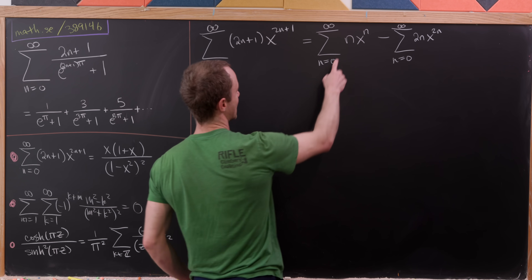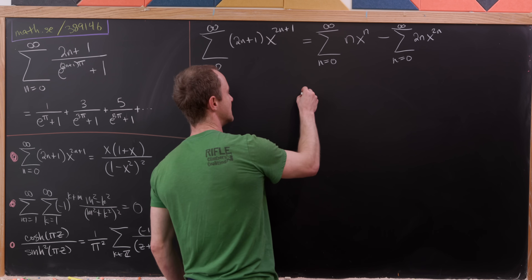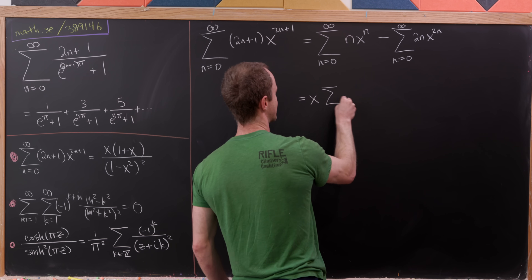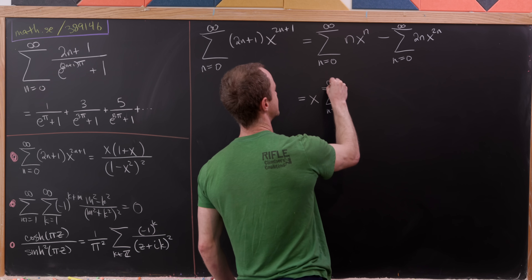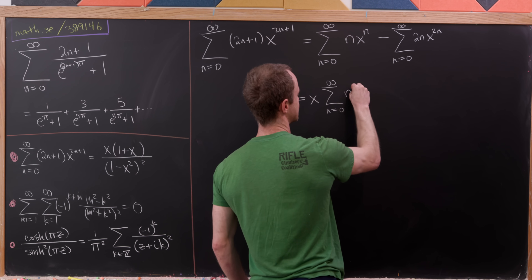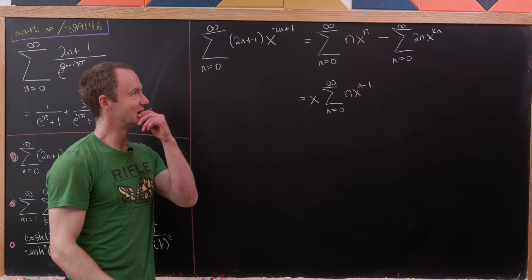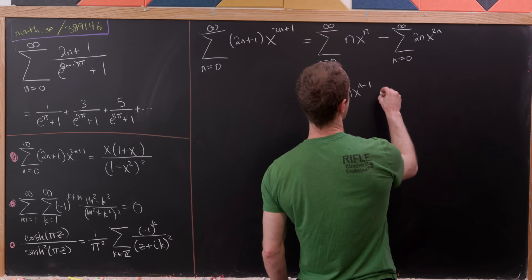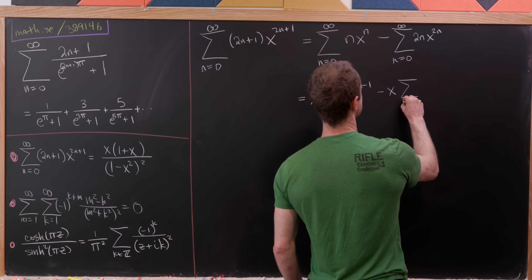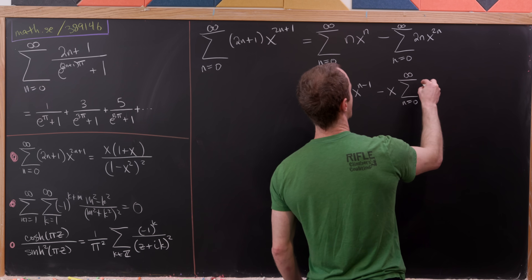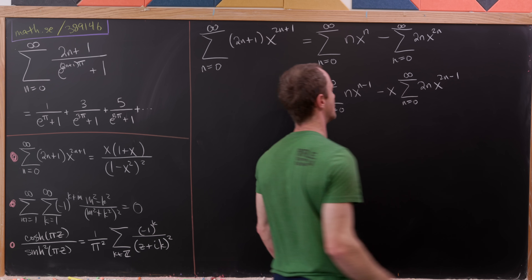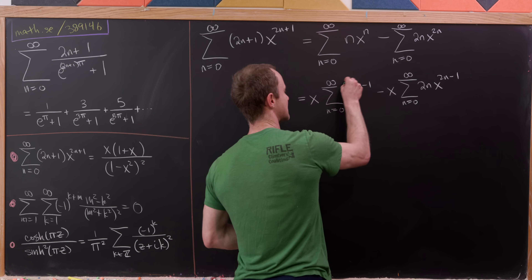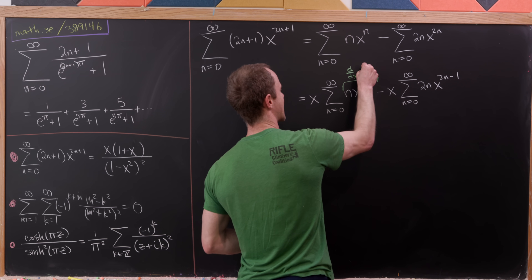It looks like a derivative has occurred. If I factor an x out, I'm left with the sum as n goes from zero to infinity of n times x^(n−1). And it looks like a derivative occurred in the second term too: if we factor an x out, we have the sum as n goes from zero to infinity of 2n times x^(2n−1).